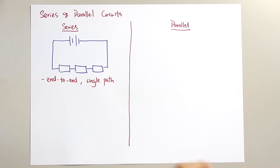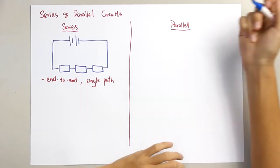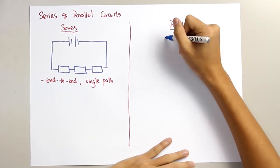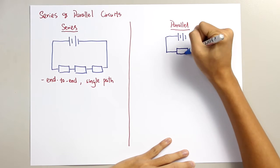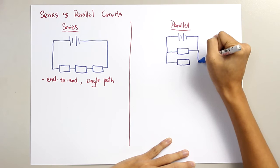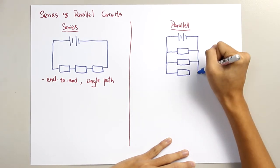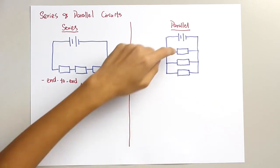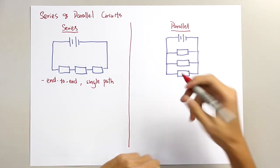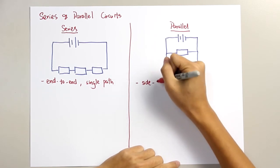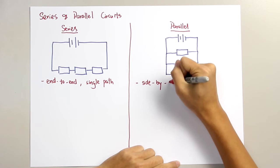While for the parallel circuit, the circuit should look something like this. The same three components are no longer end to end. Instead, they are connected side by side.